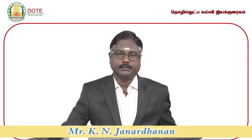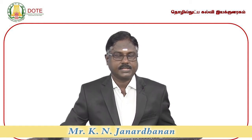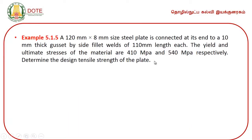We will continue the design of tension members. This is an example for a plate to find the design tensile strength. The cross-sectional dimensions are given as 120 by 8 mm, connected by a gusset plate at its ends for a length of 110 mm. The mechanical properties of the material are given.